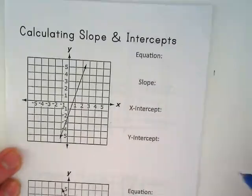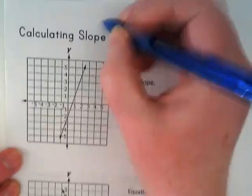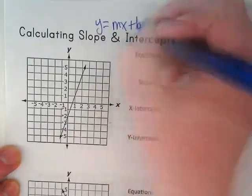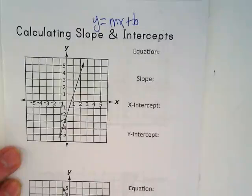When you're taking a line and creating the equation, the easiest one to do is y equals mx plus b. So the first thing we want to find here is the slope.